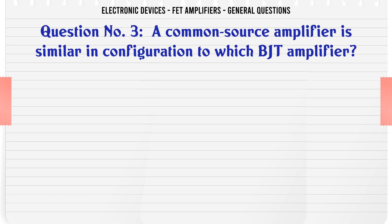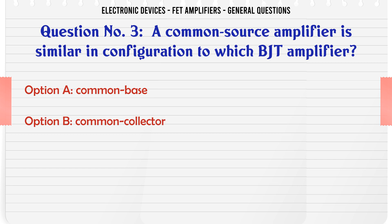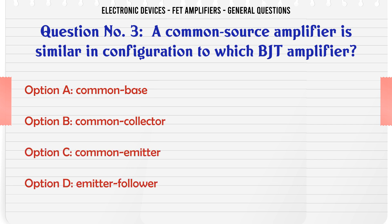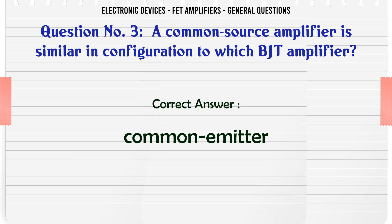A common source amplifier is similar in configuration to which BJT amplifier? A. Common Base. B. Common Collector. C. Common Emitter. D. Emitter Follower. The correct answer is Common Emitter.